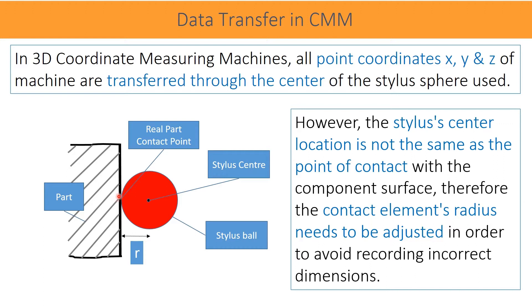In this given figure, point coordinates are measured at the center of the ruby ball, but the actual contact of the ball is here. It is exactly the radius difference. Therefore, the actual point should be moved to the contact surface to get the real part coordinates. This is called probe radius correction or compensation. It happens through the application software logics which will be discussed in the next slides.